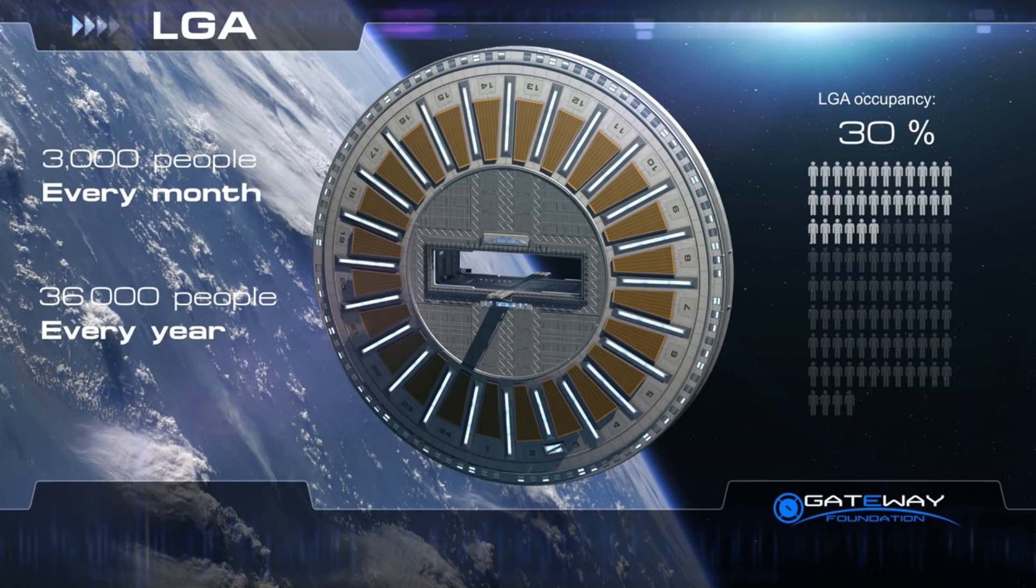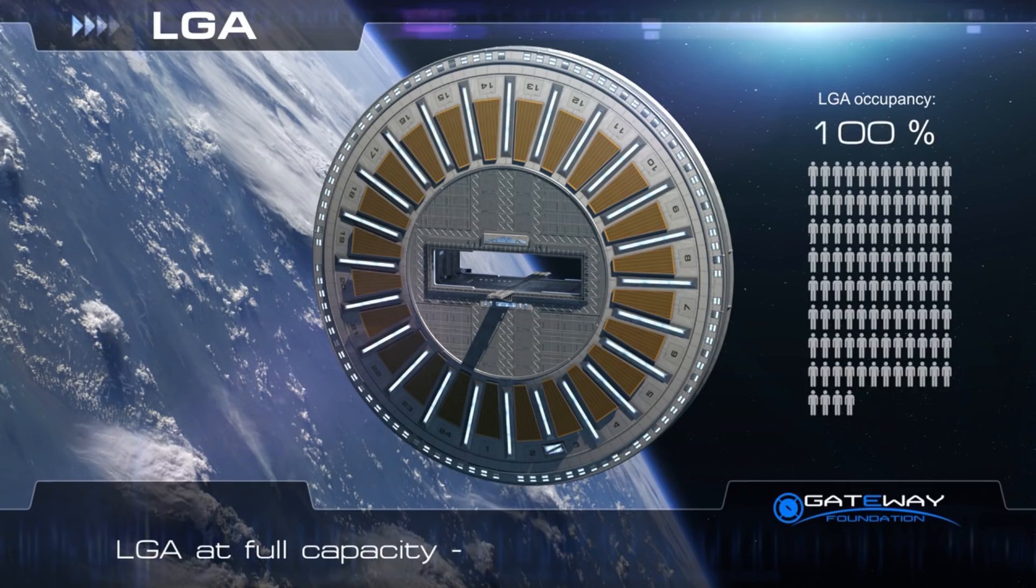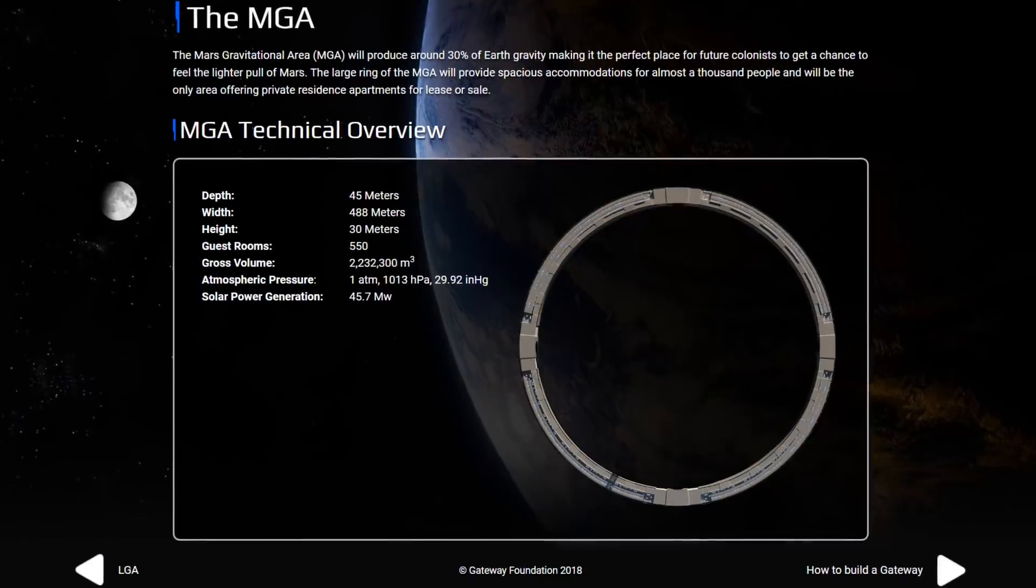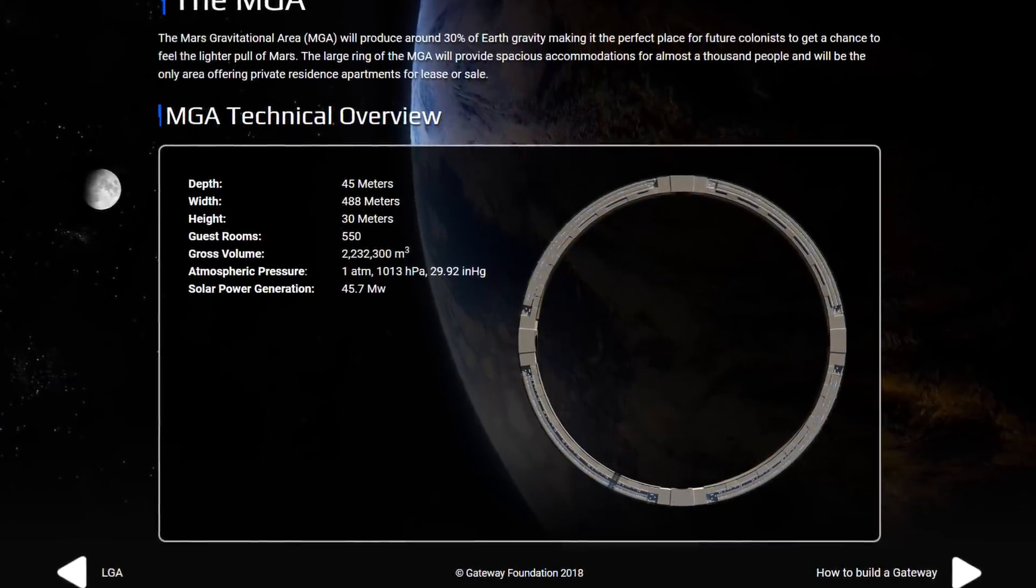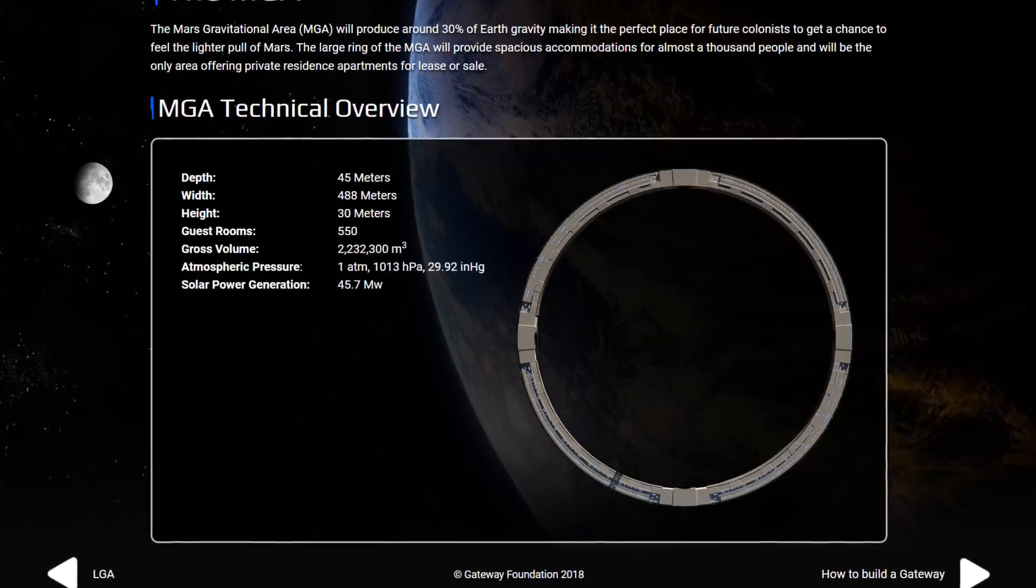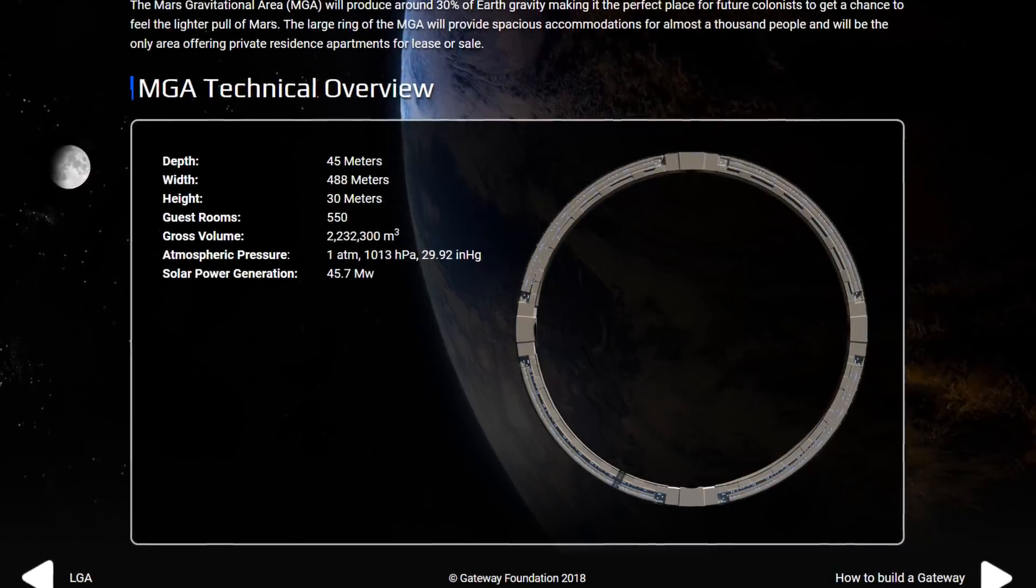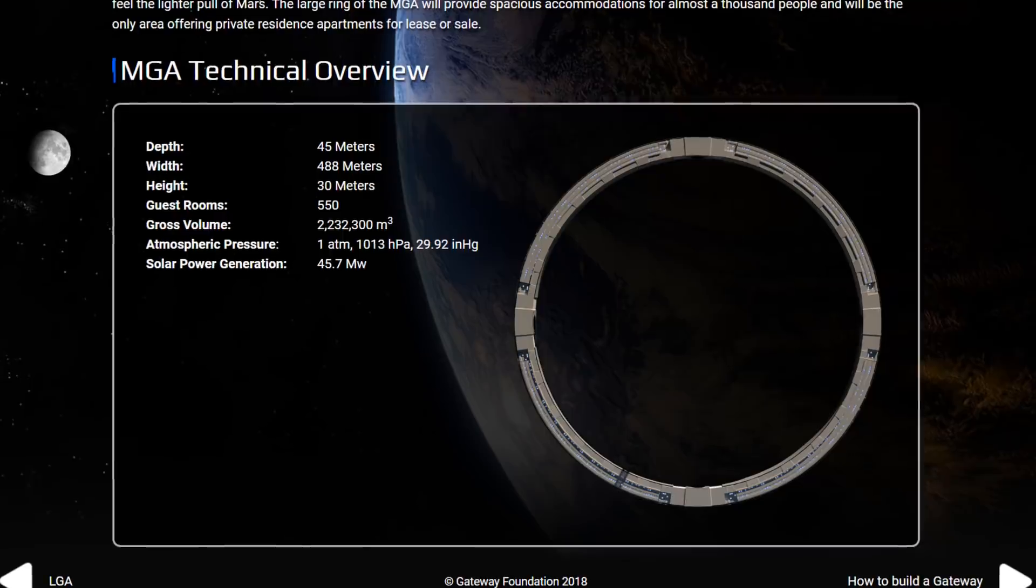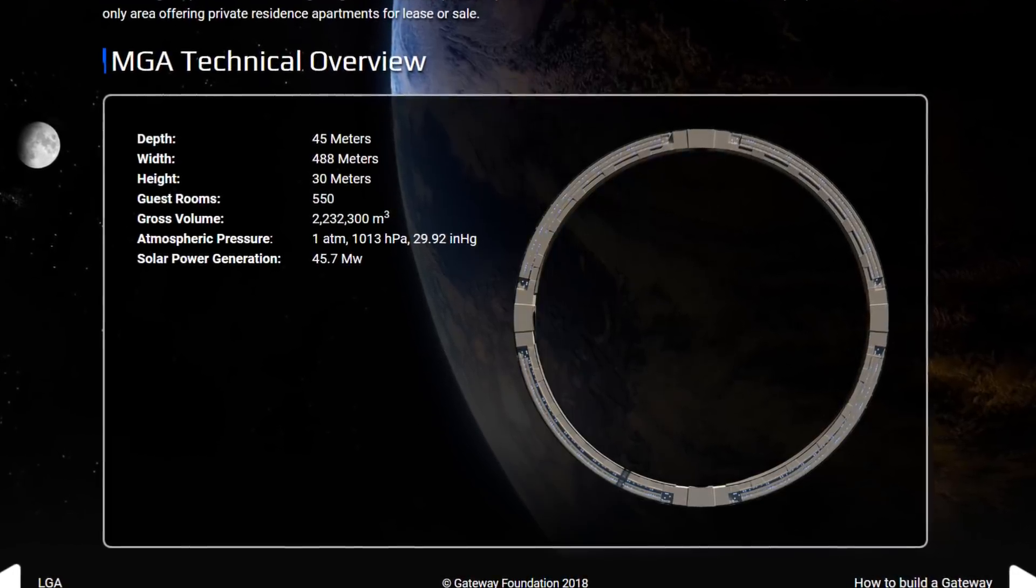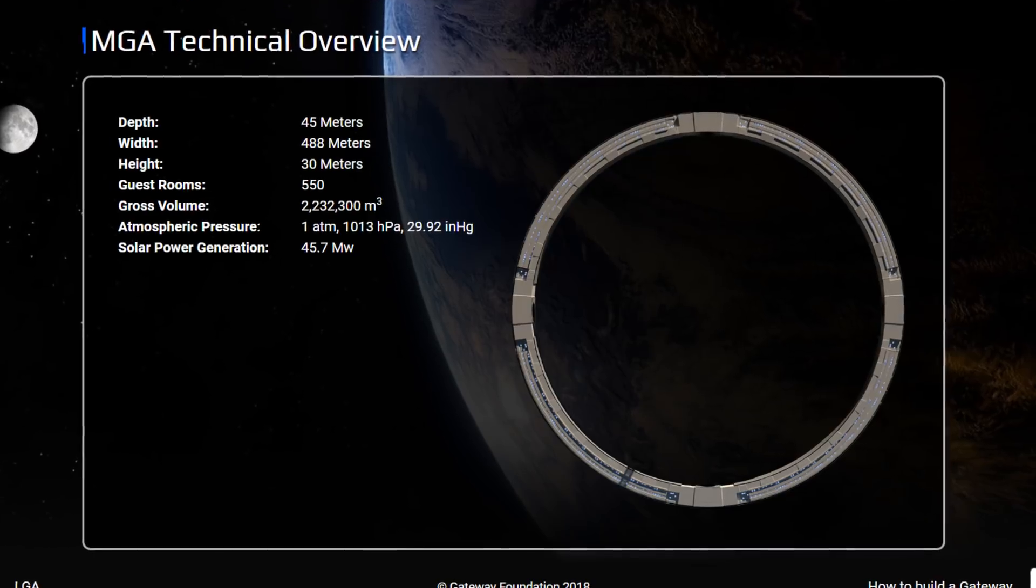Beneath that layer, there is the LGA habitation area, which is a layer of hotel rooms. And the fourth component is the Mars gravity area, or MGA, making up the outer ring of the structure, measuring over 480 meters wide. The MGA produces artificial gravity that is close to what you would experience on Mars, at 30% of the gravity you feel here on Earth. The MGA will consist of a series of apartments and condos that will house around 1,000 residents.